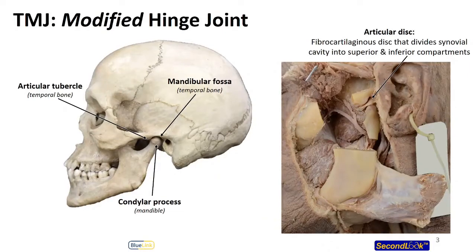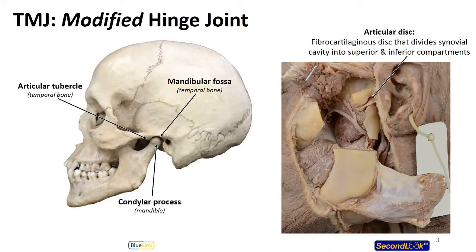A hinged joint — you can typically think of the elbow, where you can extend and flex. In the TMJ, what we actually see are four movements, and this is enabled by that articular disc modifying the joint and allowing for more movements to take place.